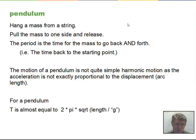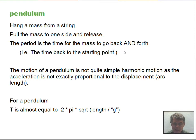It turns out the pendulum is not exactly simple harmonic motion. For simple harmonic motion, the displacement and acceleration must be proportional. For a pendulum moving on the arc of a circle, the effect of the angle causes it to differ slightly. However, if the angle is small — most people say under 15 degrees from the vertical — the pendulum closely approximates simple harmonic motion.